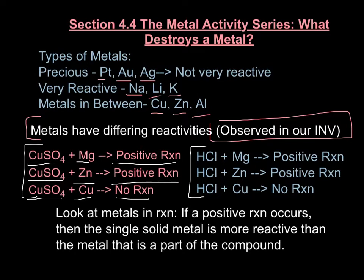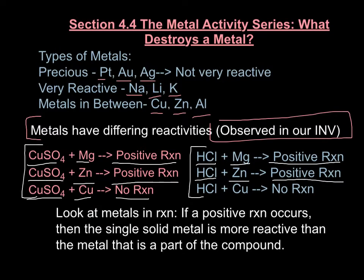On the other side with the test tubes, we had hydrochloric acid reacting with magnesium — a big positive reaction, quite exothermic, the test tube got very hot. Then hydrochloric acid reacting with zinc metal — again a positive reaction, not quite as reactive as the magnesium, but still positive. And then hydrochloric acid reacting with copper metal, and there seemed to be no reaction.